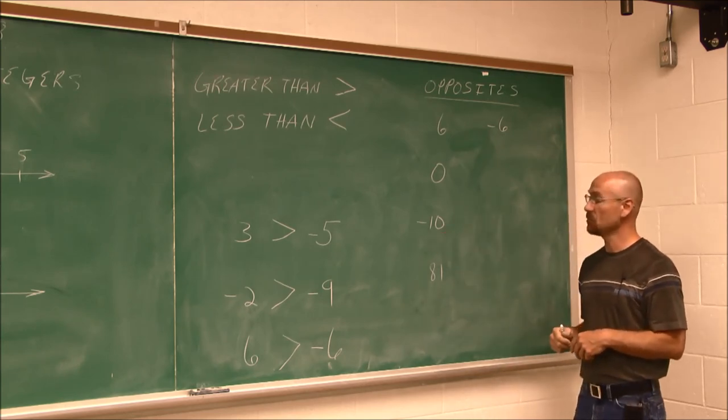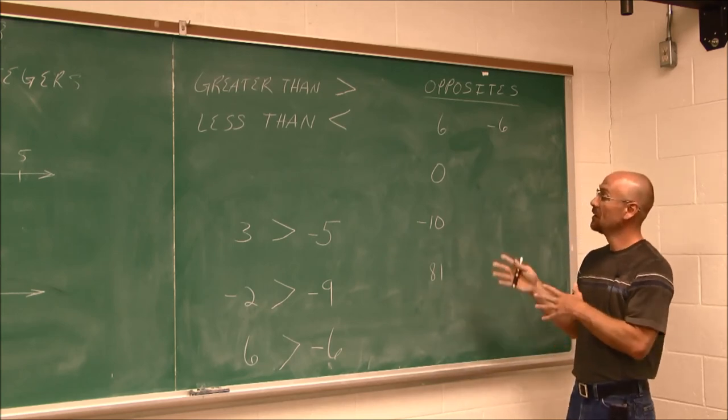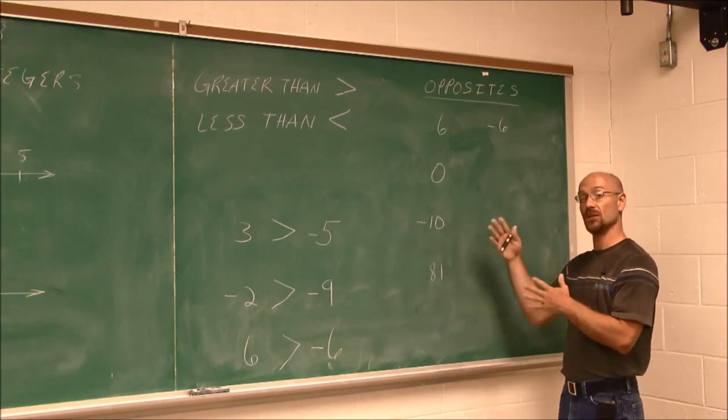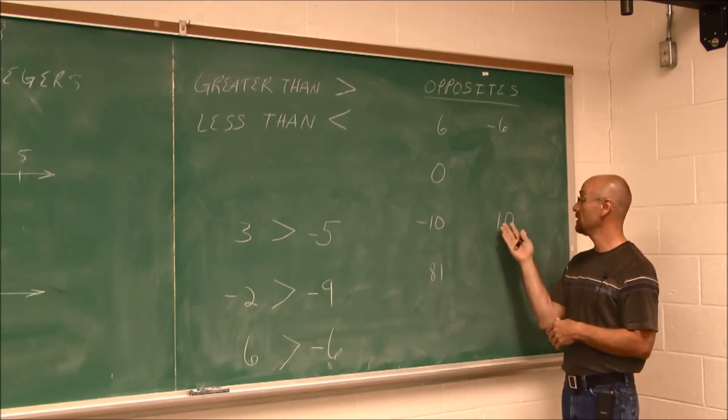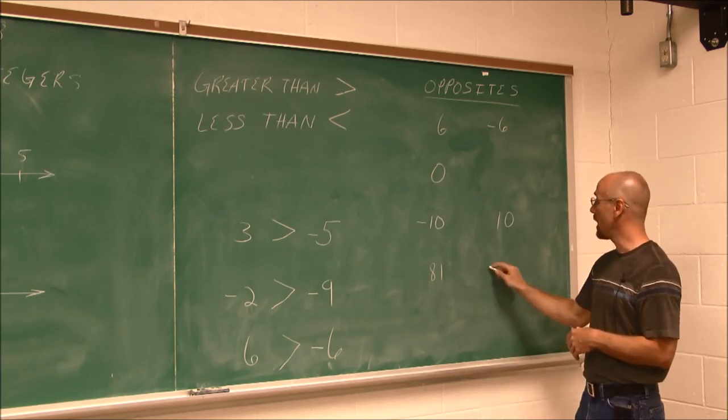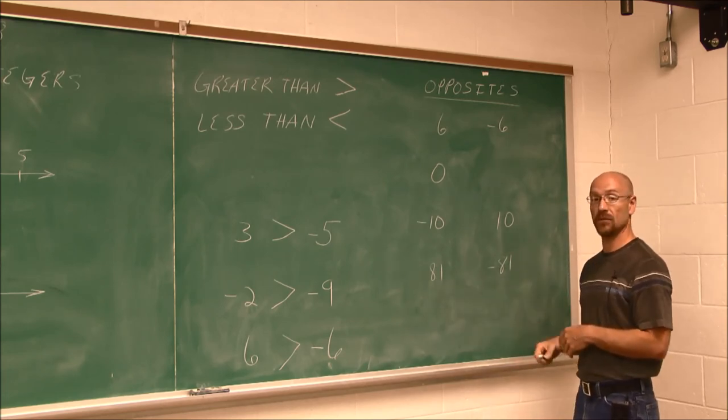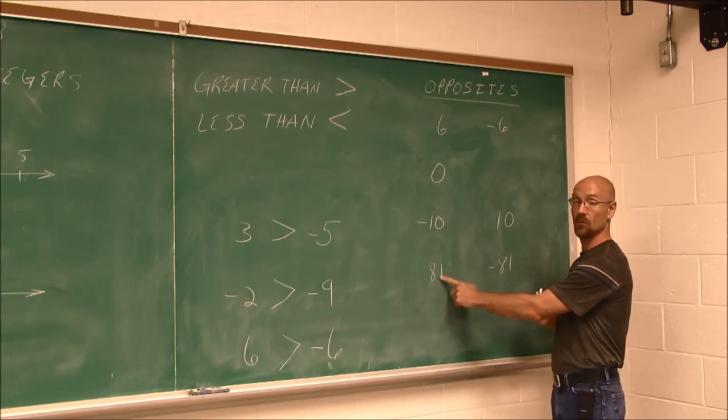Let's look at negative 10. What's the opposite of that? What number is 10 units away from 0, but instead of being to the left, it's to the right? Easy enough. You just change its sign. Negative 10's opposite is positive 10. 81, its opposite is negative 81. They're the same distance from 0, one's to the left and one's to the right.